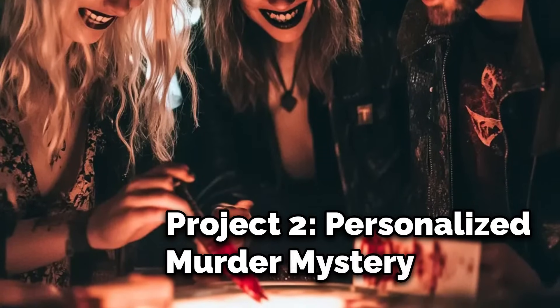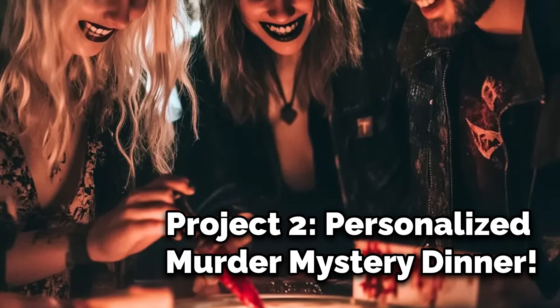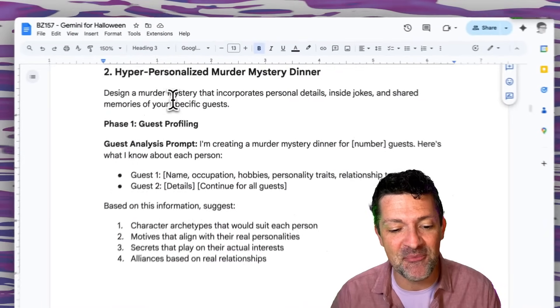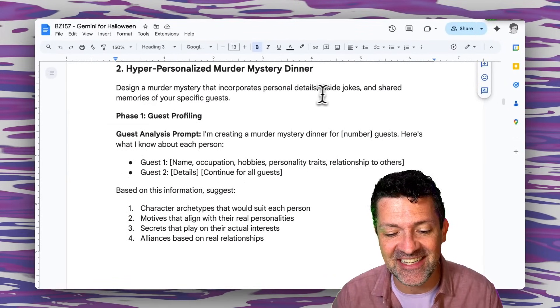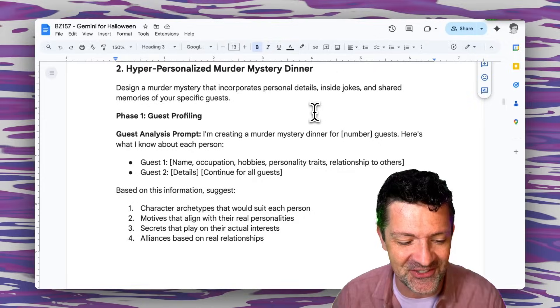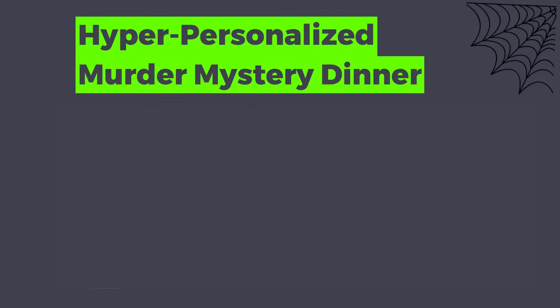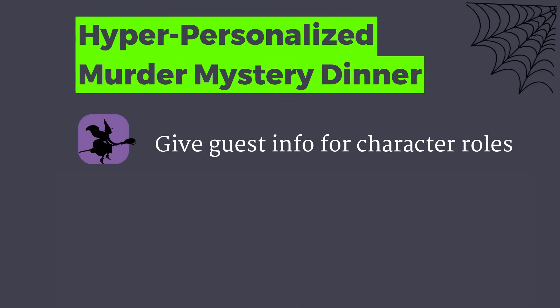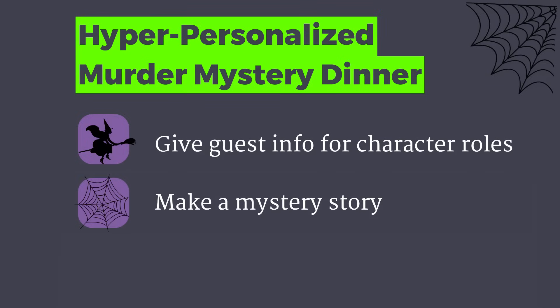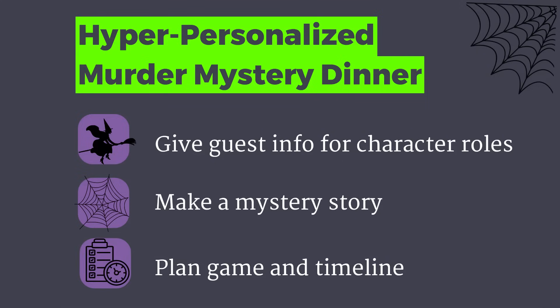Next up I want to get into a hyper-personalized murder mystery dinner. You can design a murder mystery that incorporates personal details and inside jokes about your special guests. First, prompt the AI with background on your guests and have it sketch out character archetypes. From there, ask it to generate a murder mystery plot, get backstory for each character, and map out the game materials and timeline. A bunch of my friends are in bands, so Gemini helped me craft a backstage murder mystery game that was a total riot.